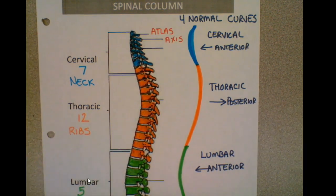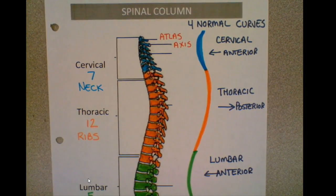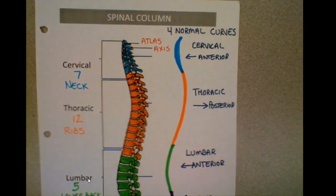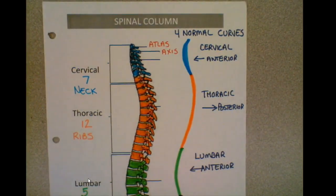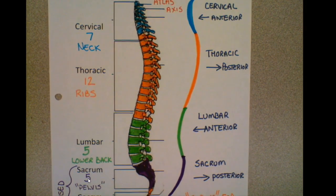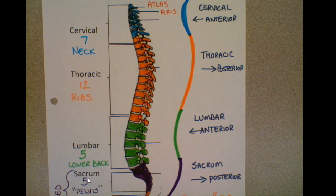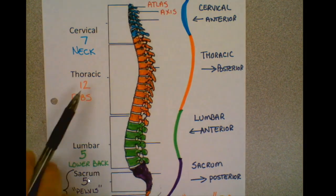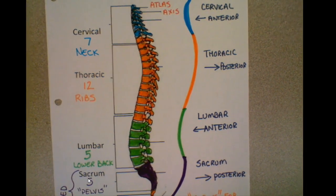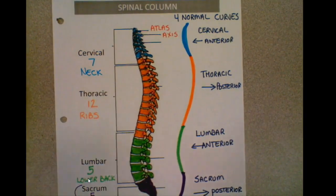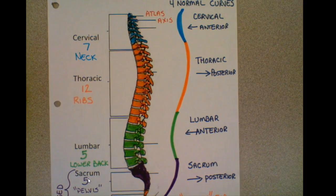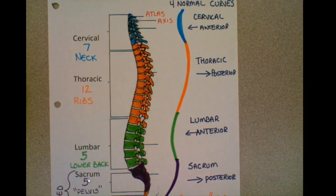This handout is going to talk about the different types of vertebrae. We know from lab that we have 7 cervical, 12 thoracic, 5 lumbar, 5 sacral, and then we have generally 4 coccygeal.